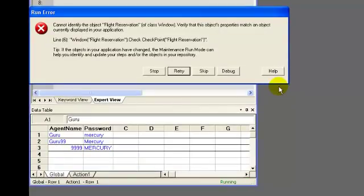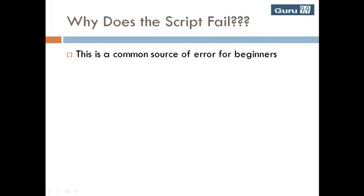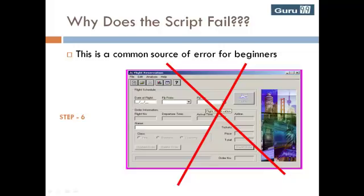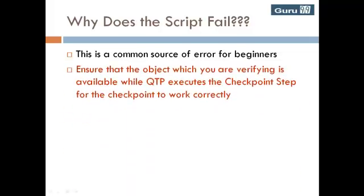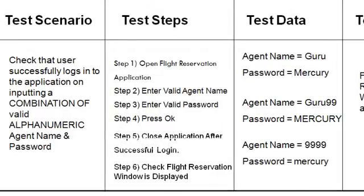The script is giving a runtime error. Let's investigate. This is a common source of errors for beginners and is applicable not only for checkpoints but other features as well. At step number 5, QTP closes the flight reservation screen. And when execution reaches step number 6, there is no flight reservation screen object available to verify its properties. You need to ensure that the object you are verifying is available while QTP executes the checkpoint step.